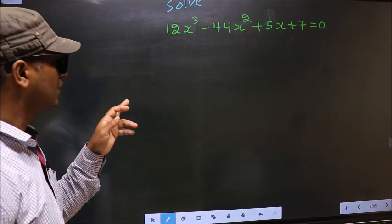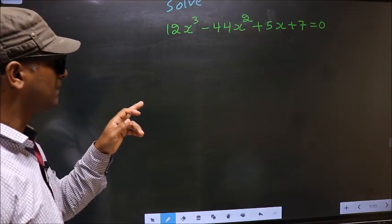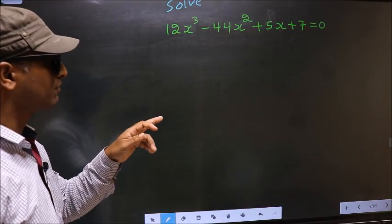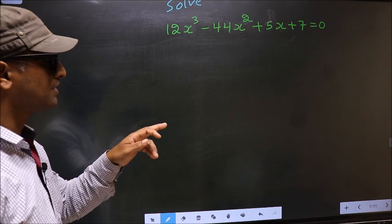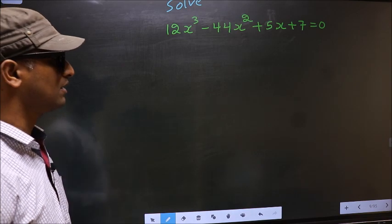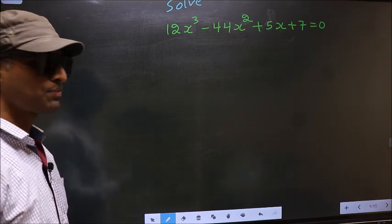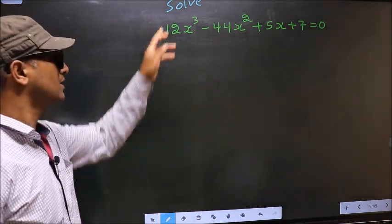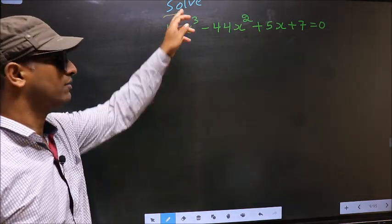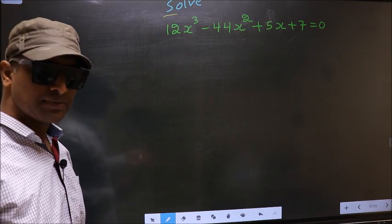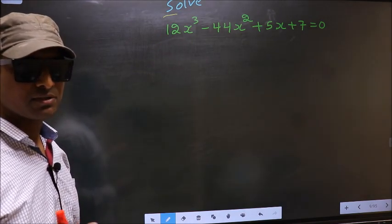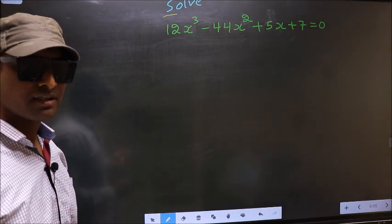Solve 12x³ minus 44x² plus 5x plus 7 equal to 0. We need to solve for the values of x.